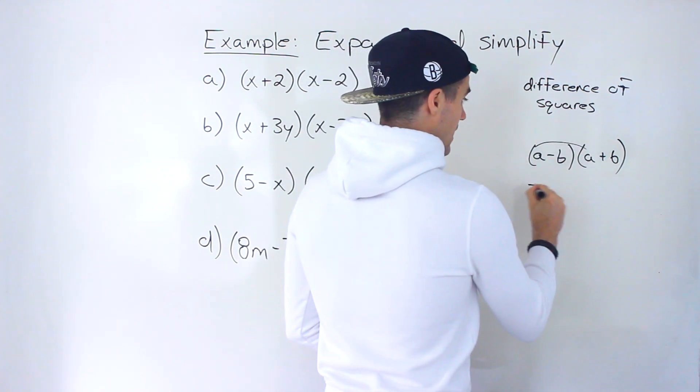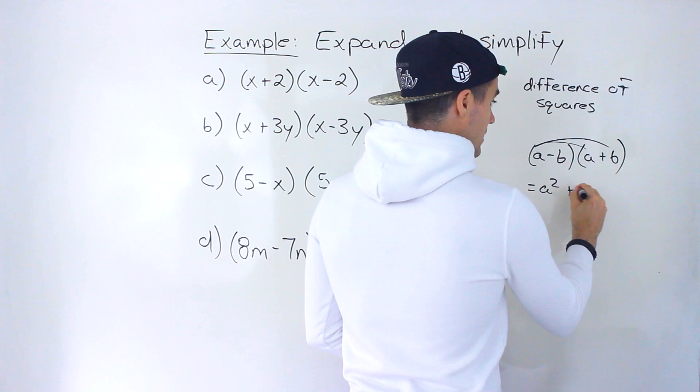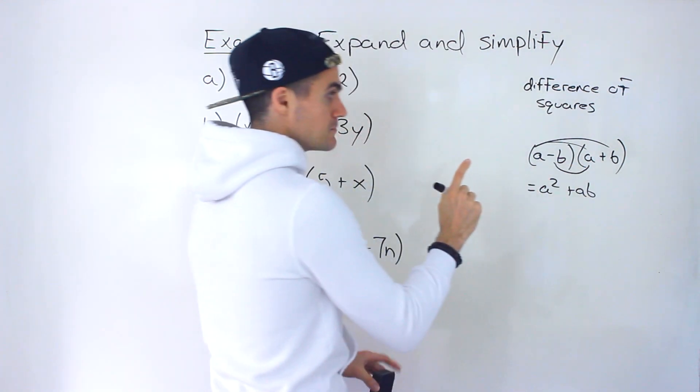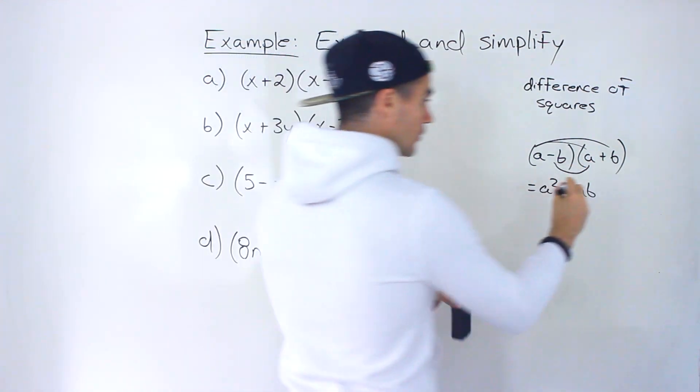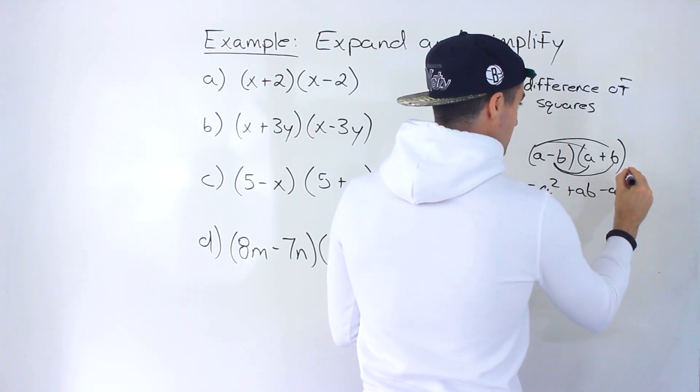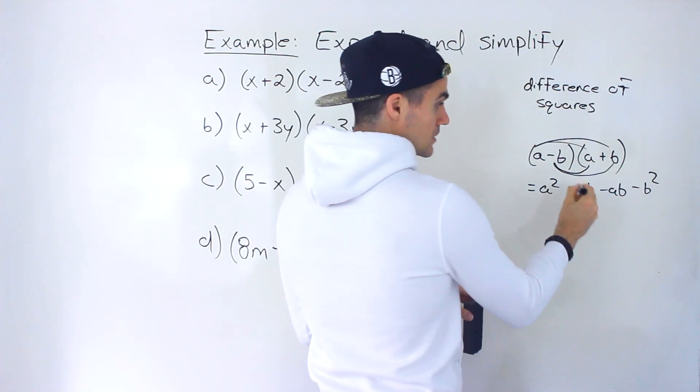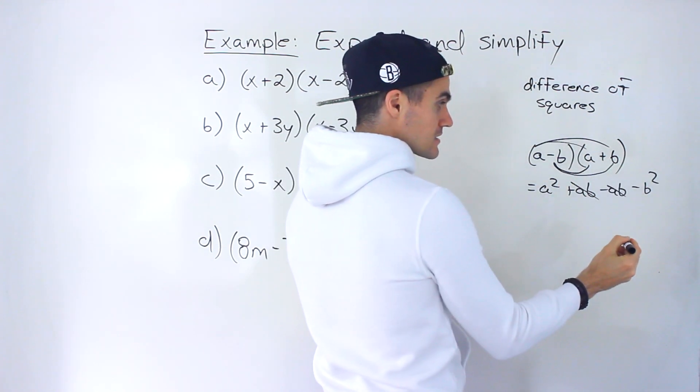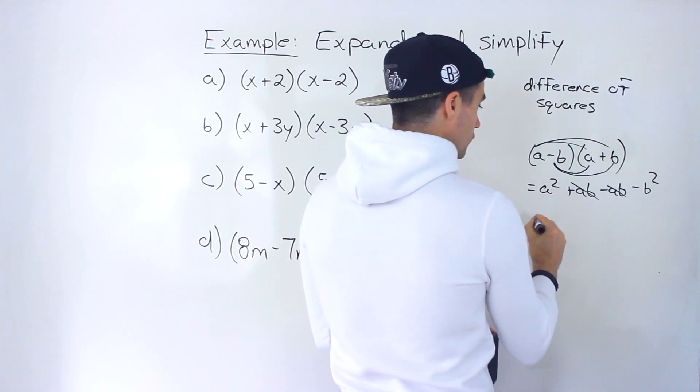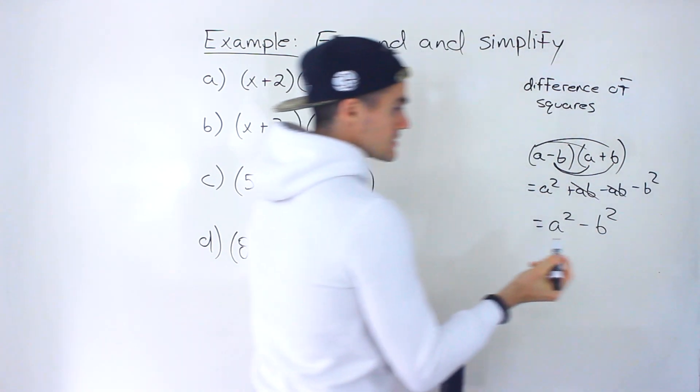Well, you'll have a times a, which is a squared, a times b, which is ab, then you'll have negative b times a. Putting those in alphabetical order, you'll have minus ab. And then you'll have negative b times positive b, which would give you minus b squared. And then notice that these are like terms and they cancel out. So there's actually no middle term there. And you end up with this over here.